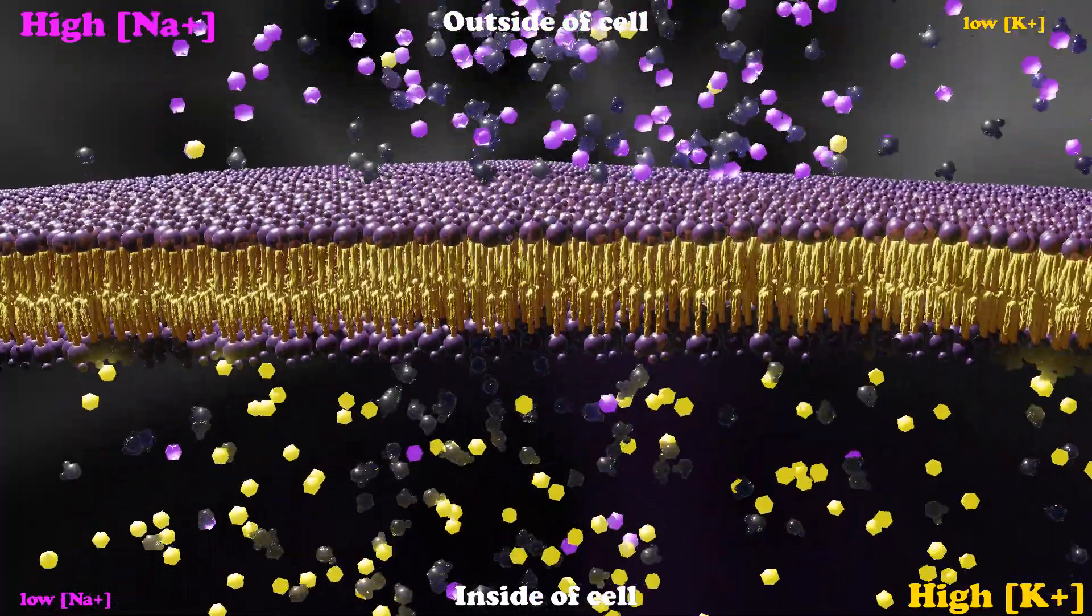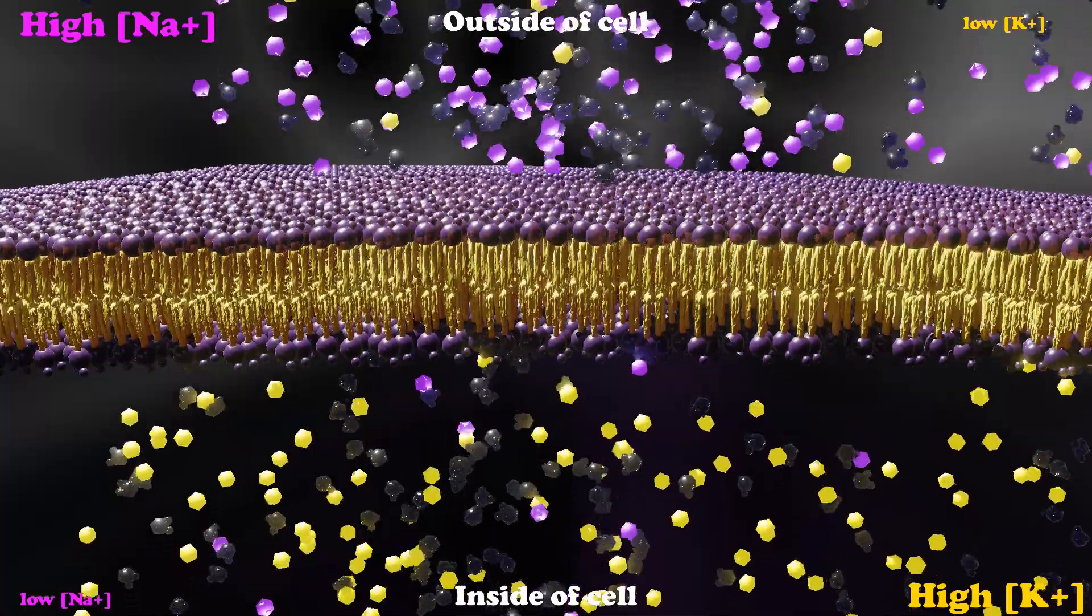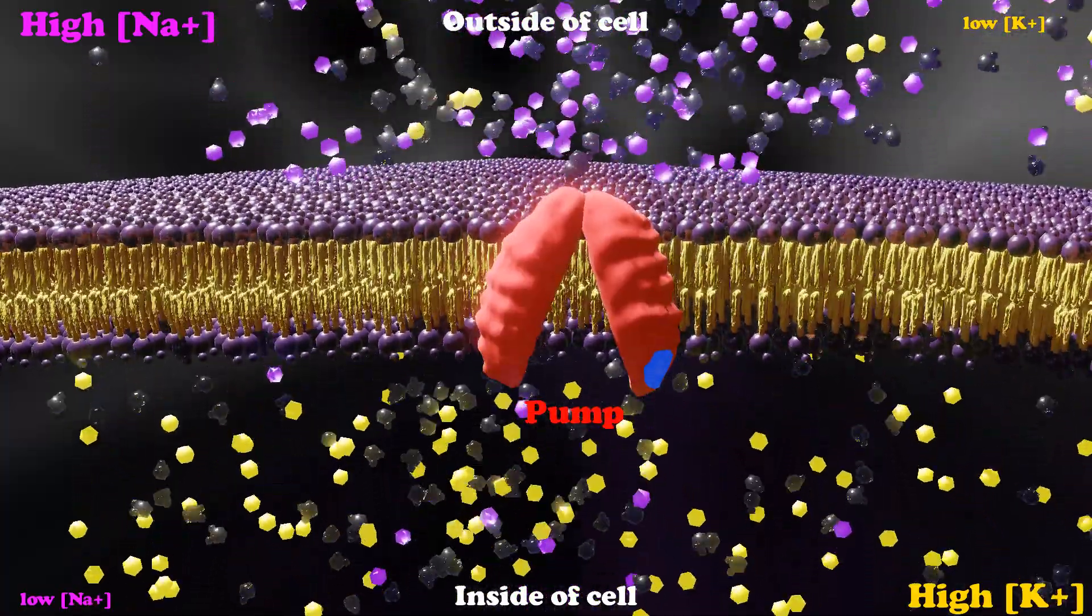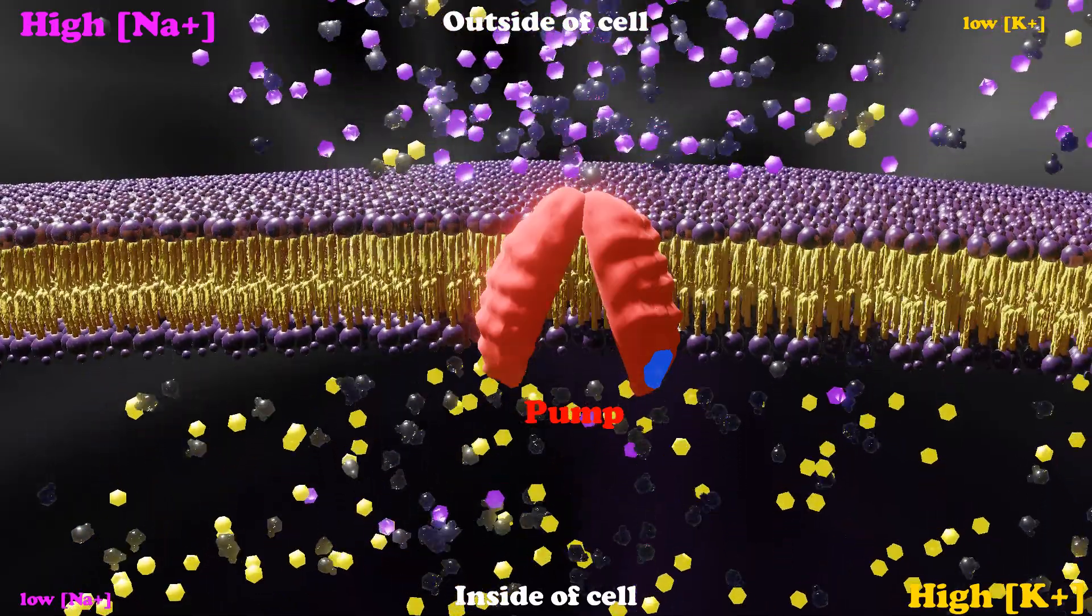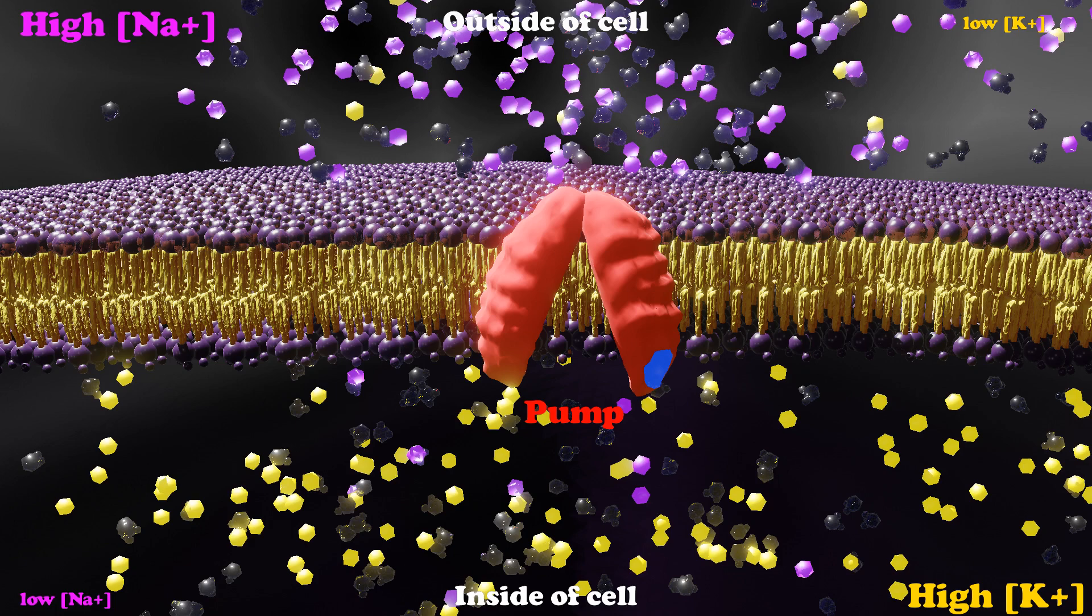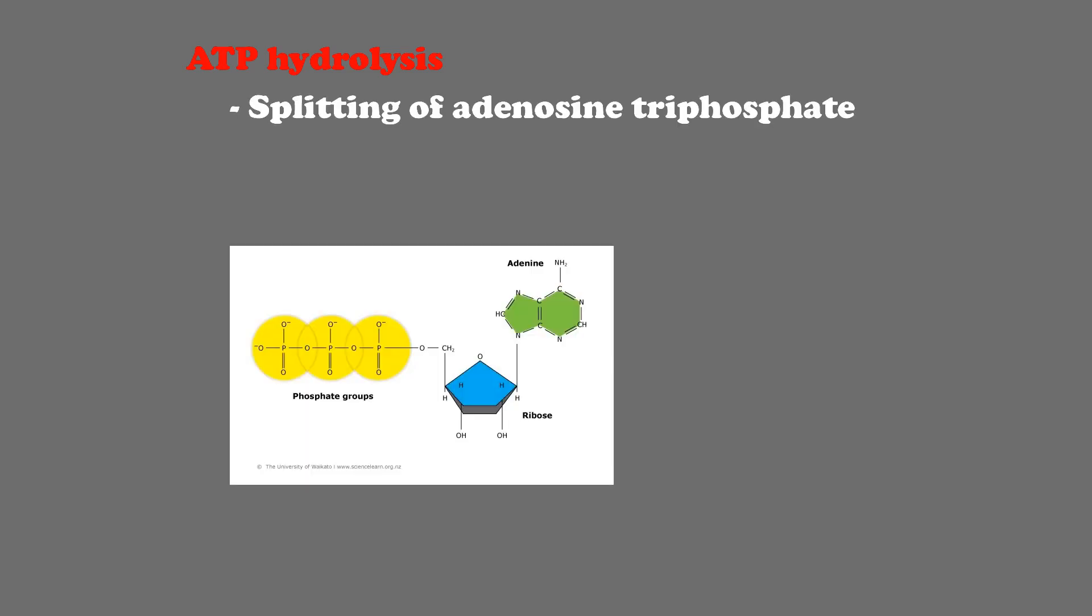So to do that, they need a special kind of carrier called a pump. The pump is able to transport these ions against the concentration gradient, and it does this by using the power of ATP hydrolysis. Now that word is really just the splitting of a fancy molecule called adenosine triphosphate. And we're going to be looking at that more closely in a future video all about ATP hydrolysis and ATP synthesis.